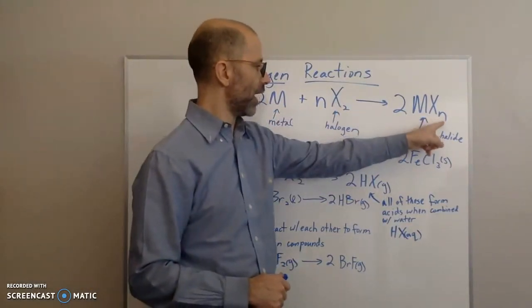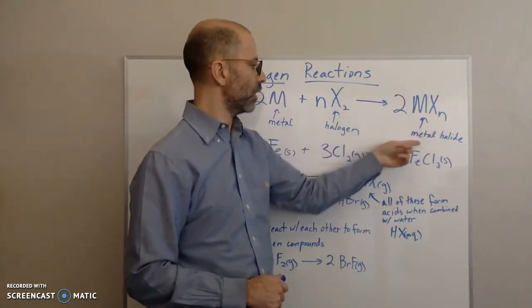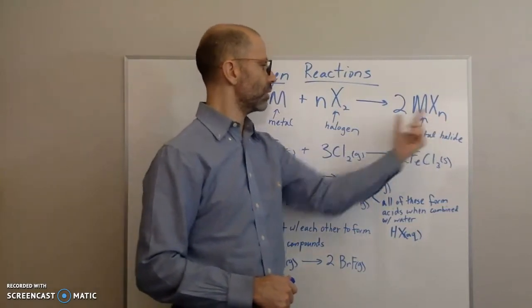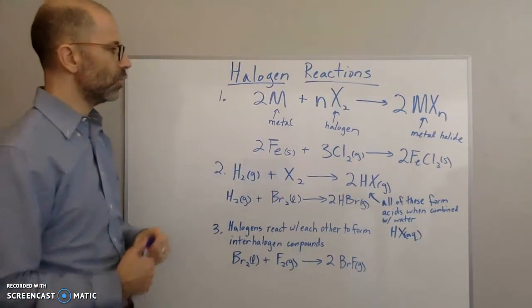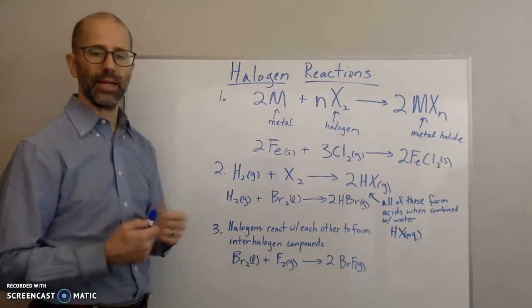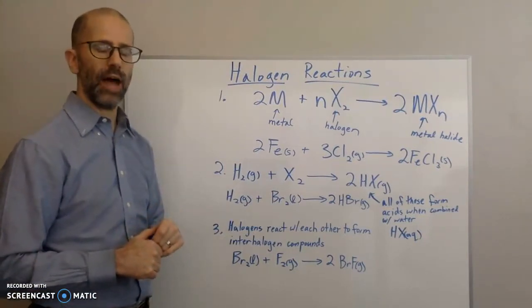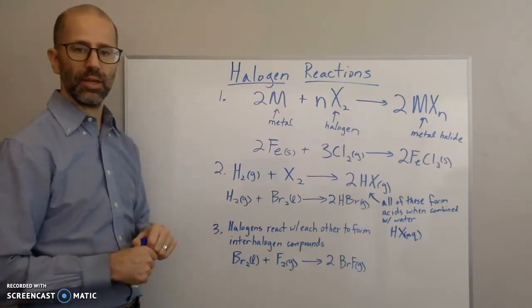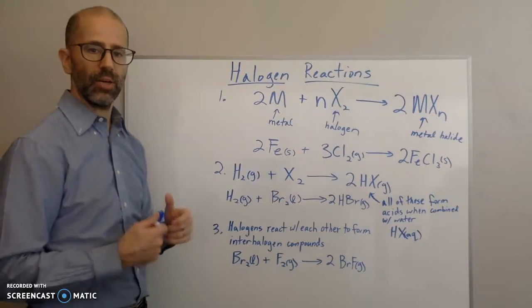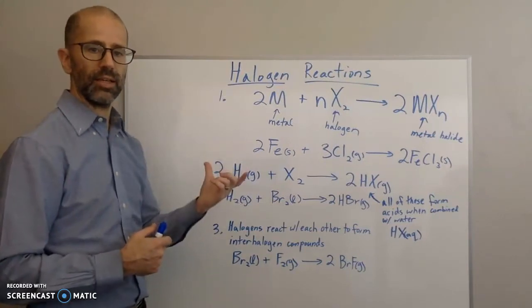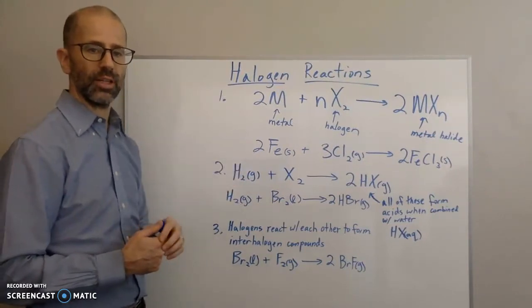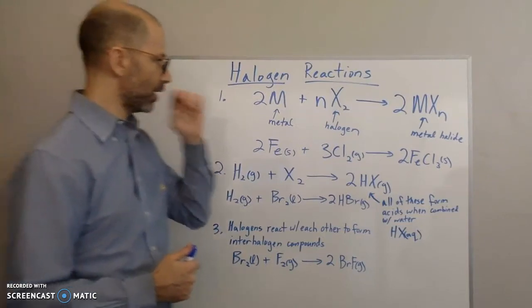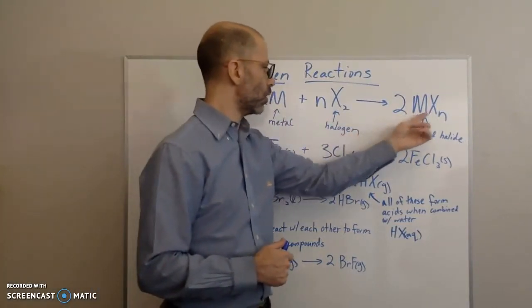They form this compound, the metal halide. We saw with the alkaline metals that they react with halogens to get the salt—the metal halide—where it's a one-to-one ratio.